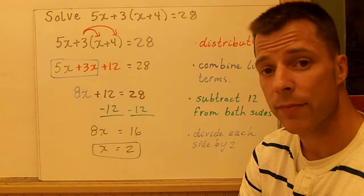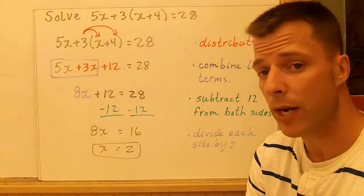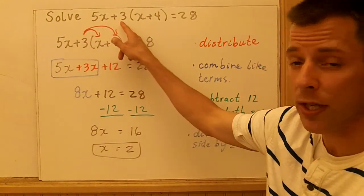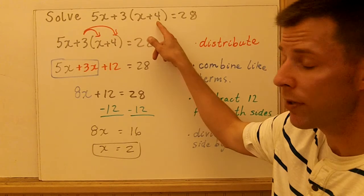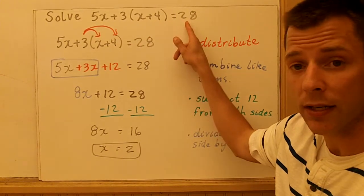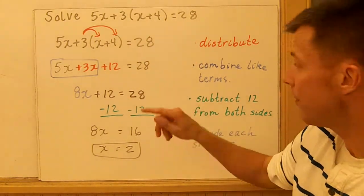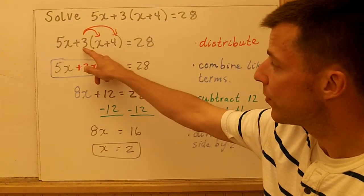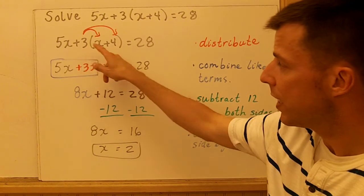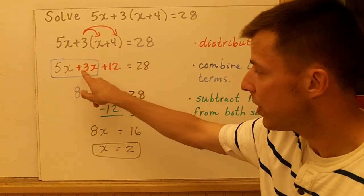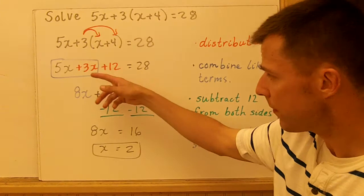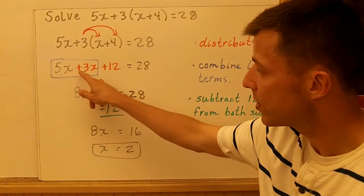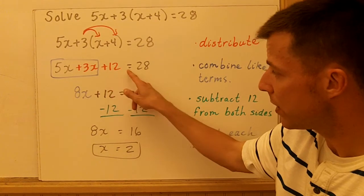Here's another multi-step equation that uses the distributive property. We're going to solve 5x plus 3 times the quantity x plus 4 equals 28. There's a lot going on. First step is always distribute. Get rid of that parentheses. The 3 is distributed to the x and to the 4, which gives me 3x plus 12. Every other term comes along for the ride. So we have 5x plus 3x plus 12 equals 28.